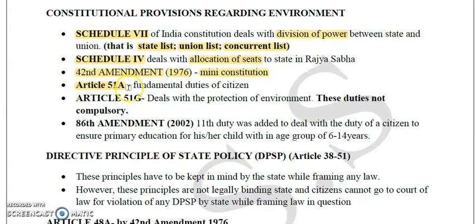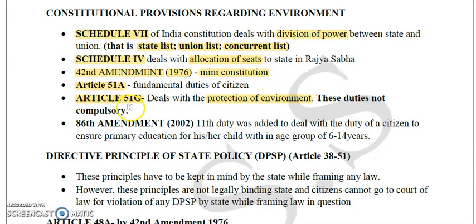Article 51 provides the fundamental duties of citizens. Article 51G is very important — it deals with the protection of the environment. These duties are not compensated. In the Constitution, two articles are very important regarding the environment: Article 48A and Article 51G. These two articles deal with the environment subject in our Constitution, so please remember these articles — they are very important from the exam point of view.